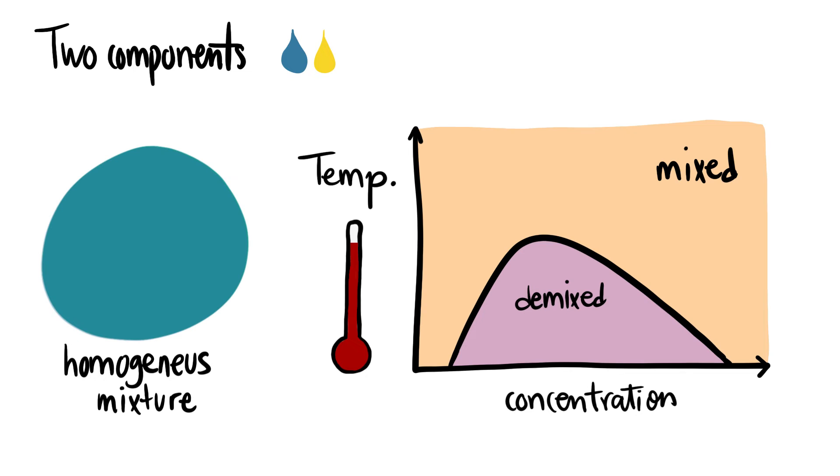Now let's imagine that we have a homogeneous mixture at this certain temperature and concentration. If we lower the temperature, keeping the concentration fixed, we reach the binodal. Below this line, the mixed state is no longer stable, so as we keep cooling the system down and cross the binodal, small droplets will form. This phenomenon is an example of phase separation.